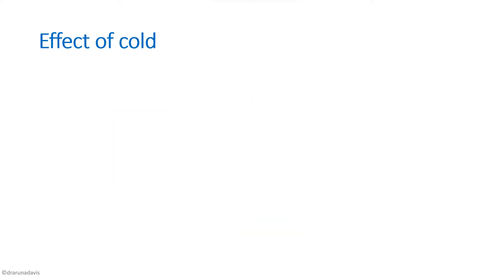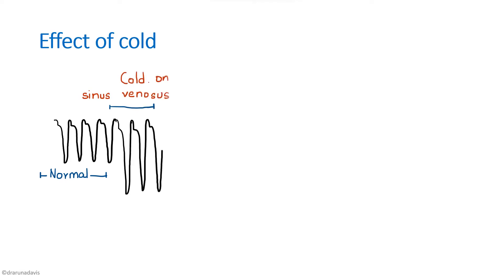Now for the effect of cold: first depict the normal cardiogram, then the effect of cold on the sinus venosus. Here there is a decrease in heart rate and an increase in amplitude. Cold on the sinus venosus decreases metabolic rate, so impulse production decreases and heart rate is reduced — that is the primary effect. When heart rate is reduced, there is more filling time for the ventricles, so end-diastolic volume increases. According to the Frank-Starling law, more end-diastolic volume means increased initial length and thus increased force of contraction, which is why amplitude has increased.